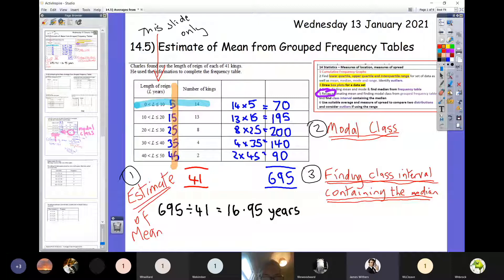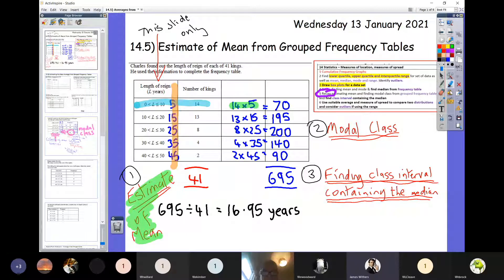Once you've done that additional extra step of popping in that column in orange, the rest of it is exactly like yesterday. When we are estimating the mean, we've got to call it estimating the mean because we've made that assumption that those 14 kings reigned for exactly 5 years. We now just cross multiply. We did 14 times 5 to get 70.